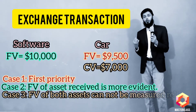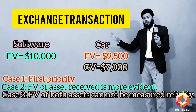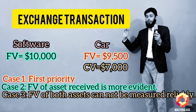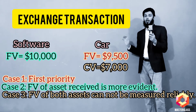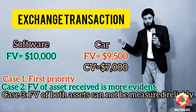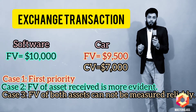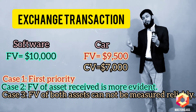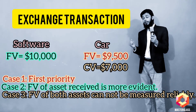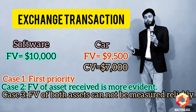Now what if the fair value of both assets cannot be determined? The fair value of the software cannot be measured reliably and the fair value of the car cannot be measured reliably. According to the standard, if both fair values cannot be measured reliably, the asset received would be recognized at the carrying amount of the asset given up, which in our case is seven thousand dollars.